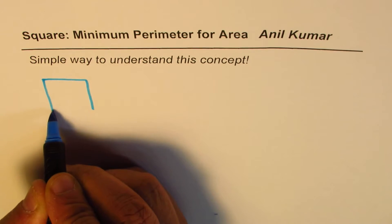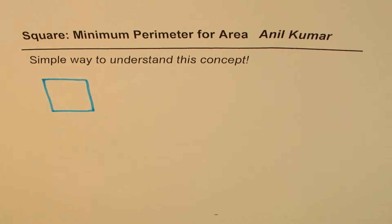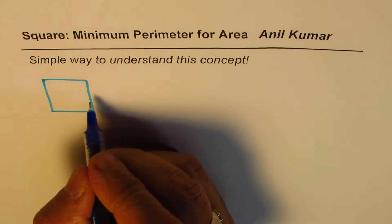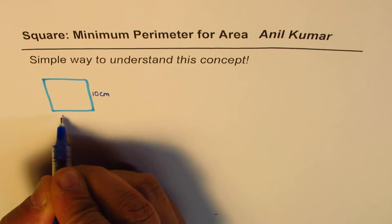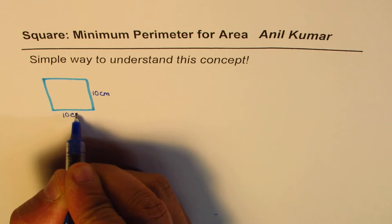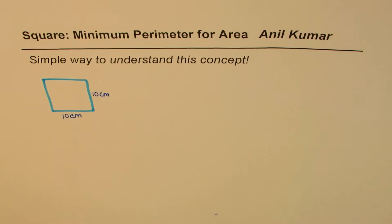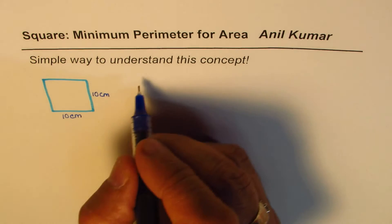Let me say the size of the square is 10 centimeters by 10 centimeters. So we are considering a square which is 10 centimeter by 10 centimeter. Now for this square, what is the area?